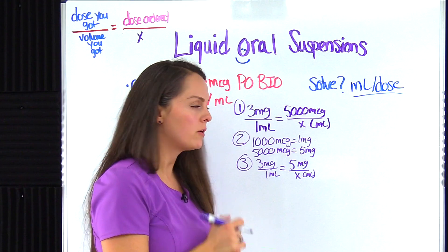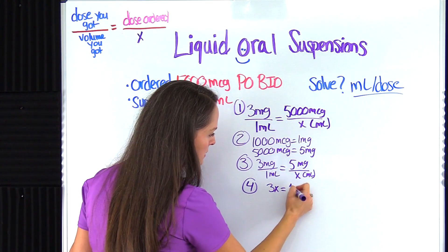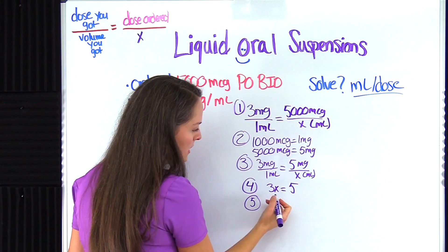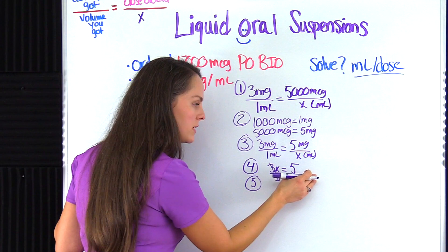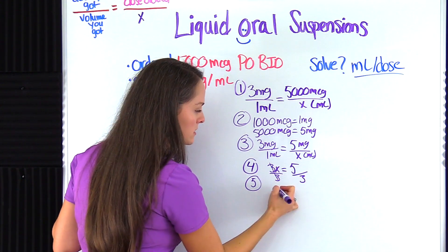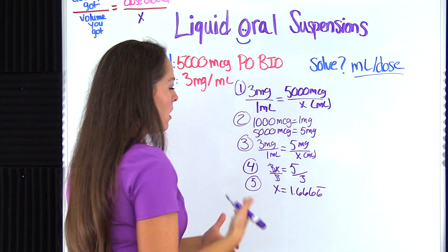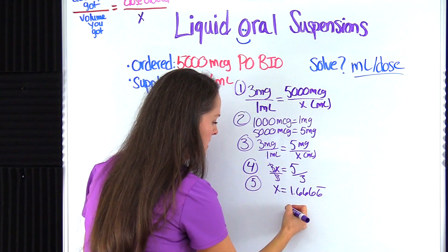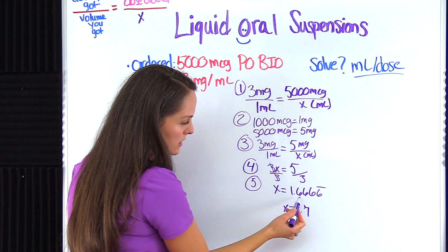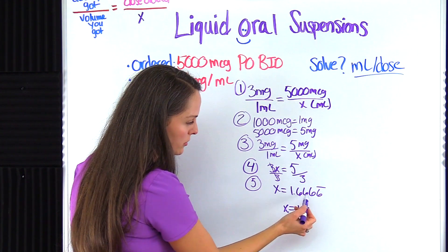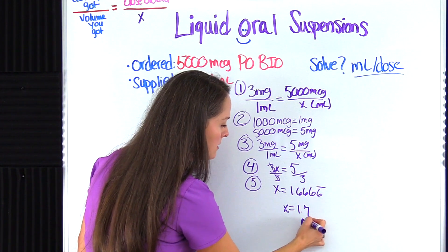Now let's solve for x. We cross multiply: three times x gives three x, and one times five gives five. To isolate x, we divide both sides by three. So x equals five divided by three, which is 1.6666 repeating. Always round according to how your university wants you to round — I'm rounding to the nearest tenth. Looking at the hundredths place, it's six, which is five or greater, so we round up. Our answer is 1.7 milliliters per dose.